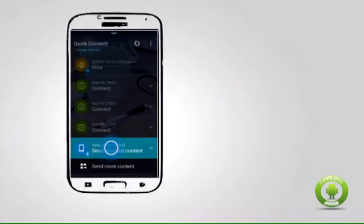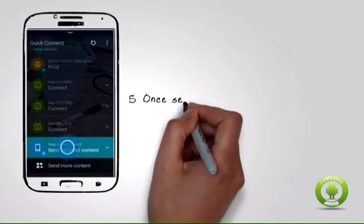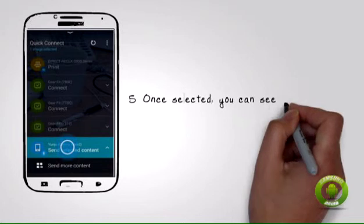Step 5: Once selected, you can see a label explaining the action that can be done with the selected device. In this case, you can send the selected content to the chosen nearby device.